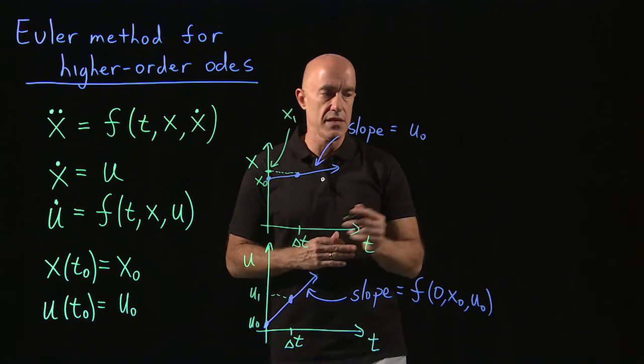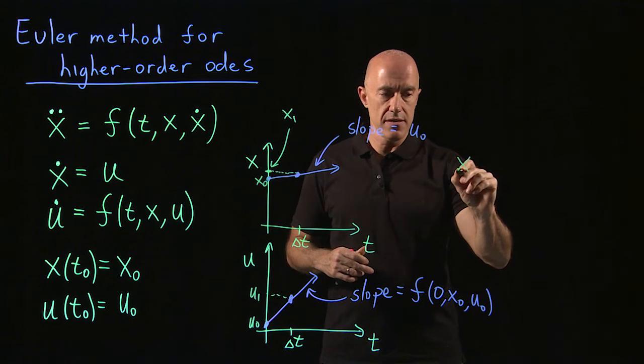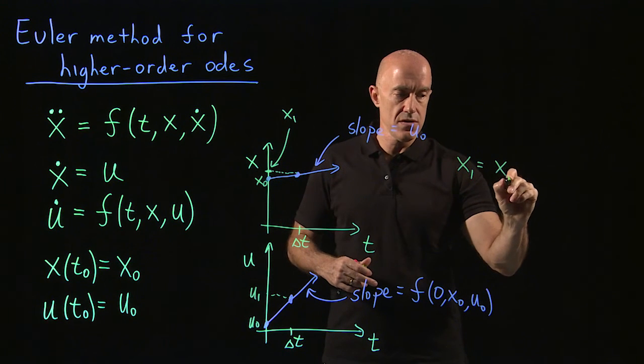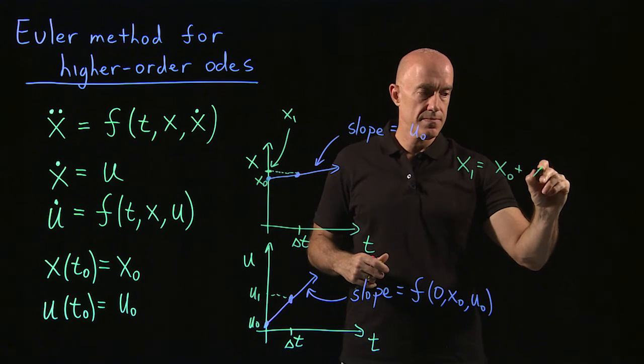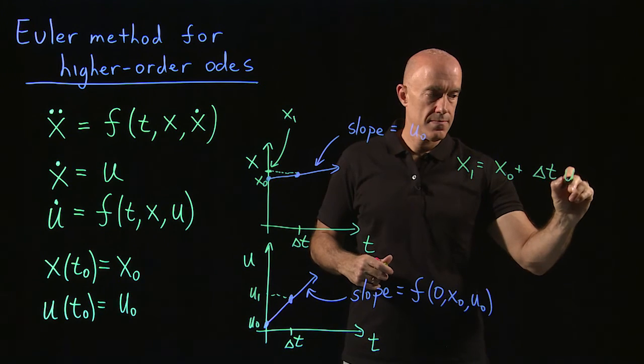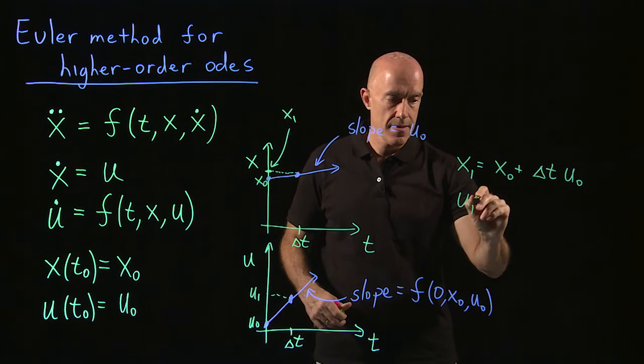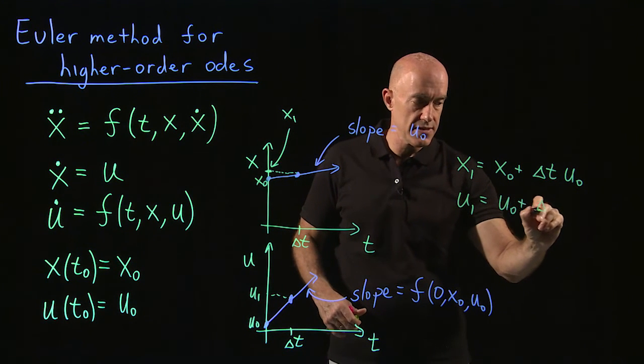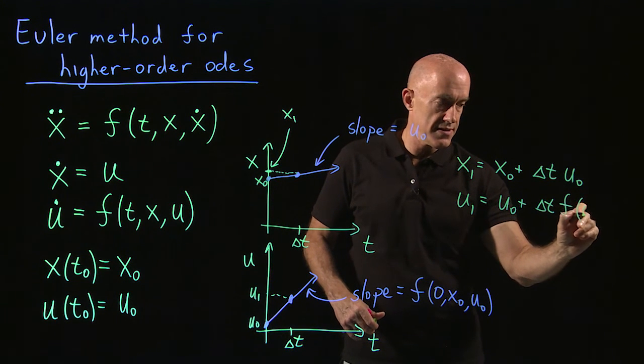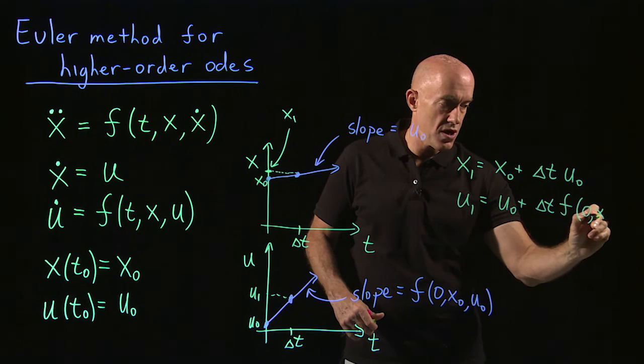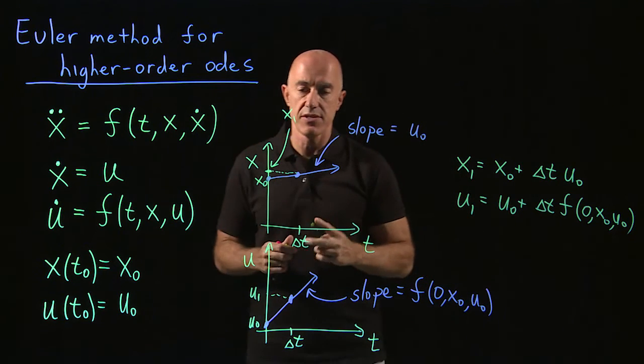So the solution is rather straightforward. We get x1 equals x0 plus delta t times the slope. And then we get u1 equals u0 plus delta t times that slope, which will be f of 0, x0, u0. So then we've taken our one Euler step.